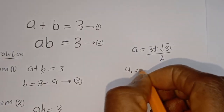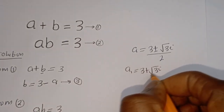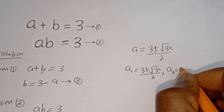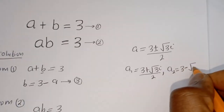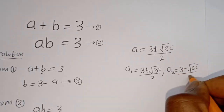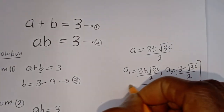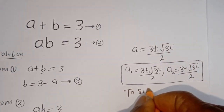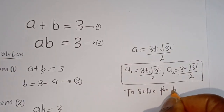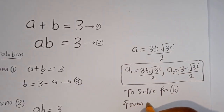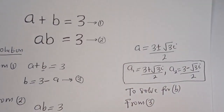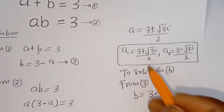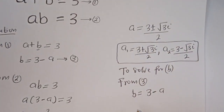So A₁ is equal to (3 plus √3·i) over 2, and A₂ is equal to (3 minus √3·i) over 2. These are the values of A. Now let's solve for B. From equation 3, B is equal to 3 minus A.